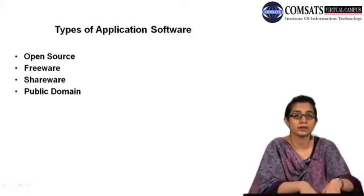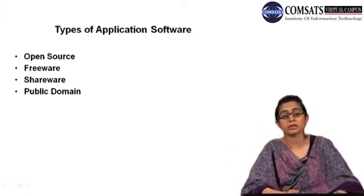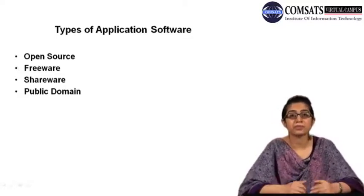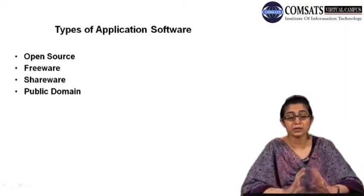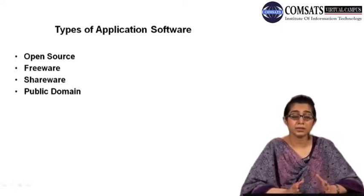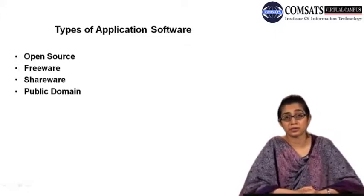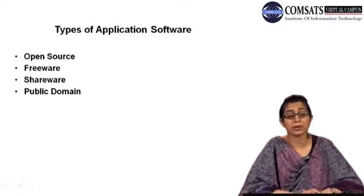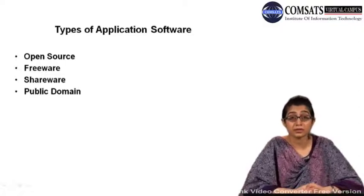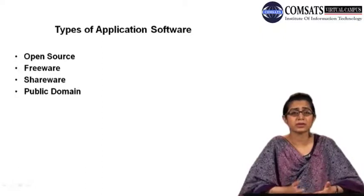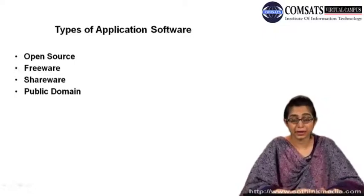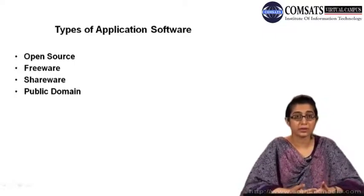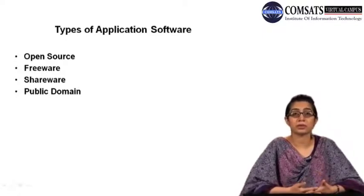There are different kinds of application software that are less expensive: open source software, freeware, shareware, and public domain — four different kinds. You can also log on to the internet and read more about them. Most of these software are easily downloadable and can be easily installed on computer systems. They can be used completely free, on a trial basis, or simply without any kind of copyright problems.